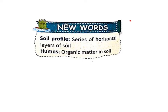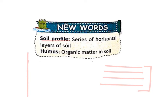Now let's study these two new words. Soil profile: a series of horizontal layers of soil — the vertical section of soil showing all the layers is called soil profile. Second, humus: the organic matter in the soil. The dead remains of plants and animals in the soil are organic matter — that is called humus.